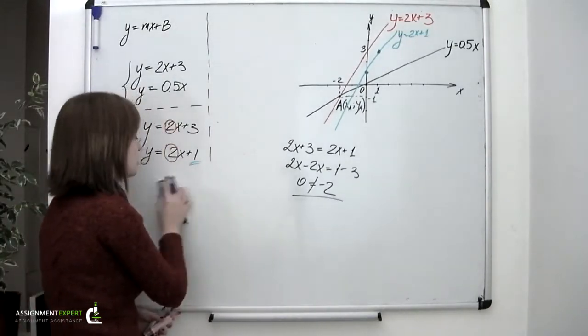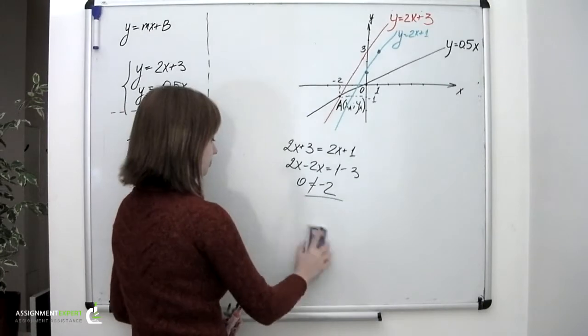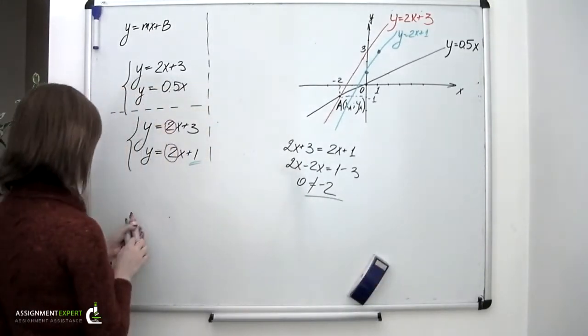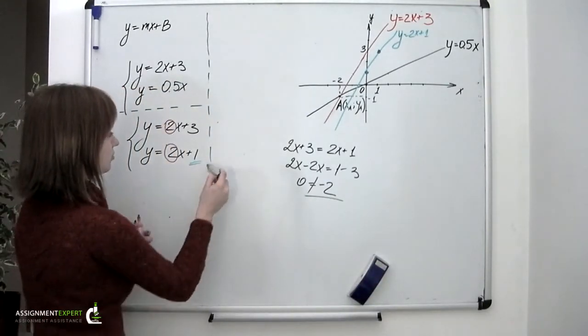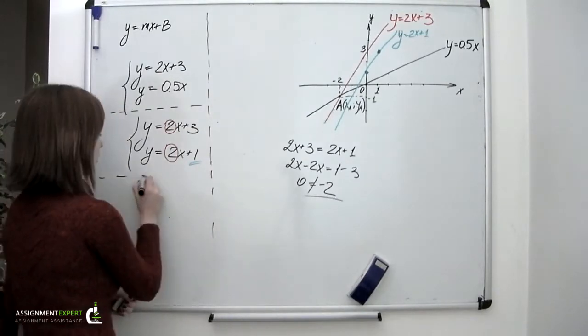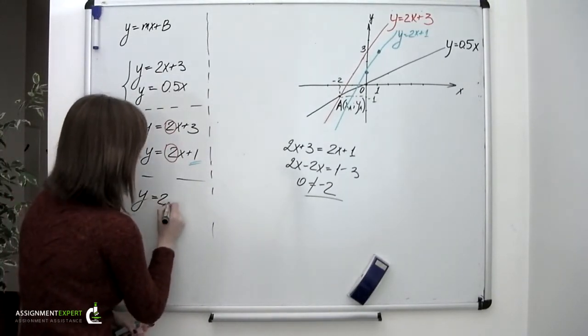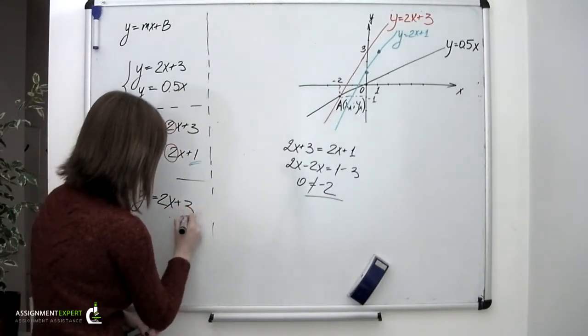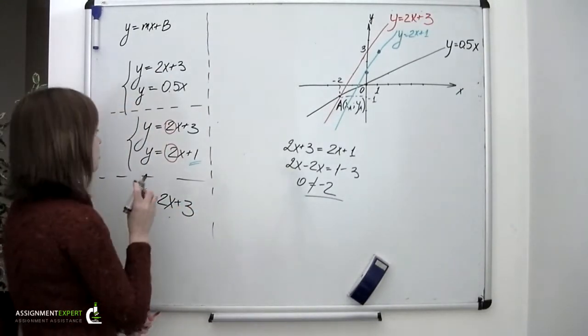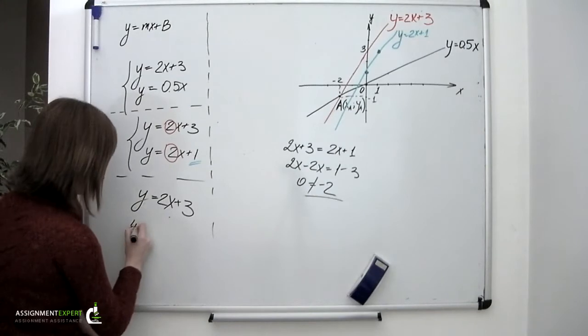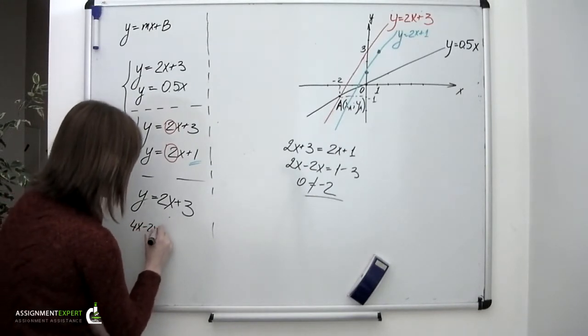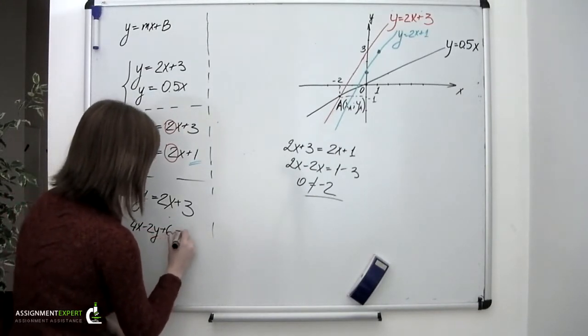Let's now consider another example. With the first equation still remaining the same. And the second looking like this: 4x minus 2y plus 6 equals 0.